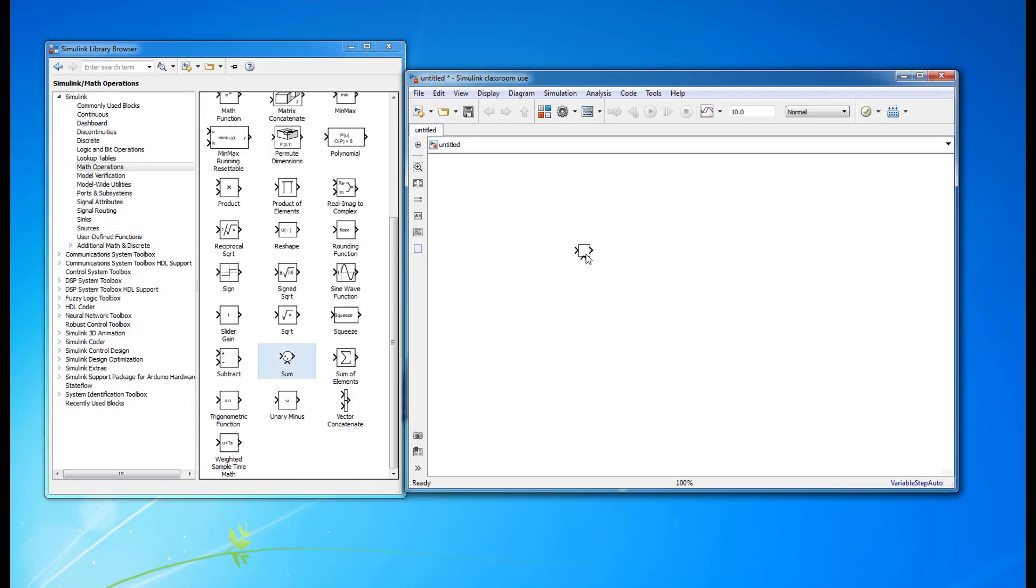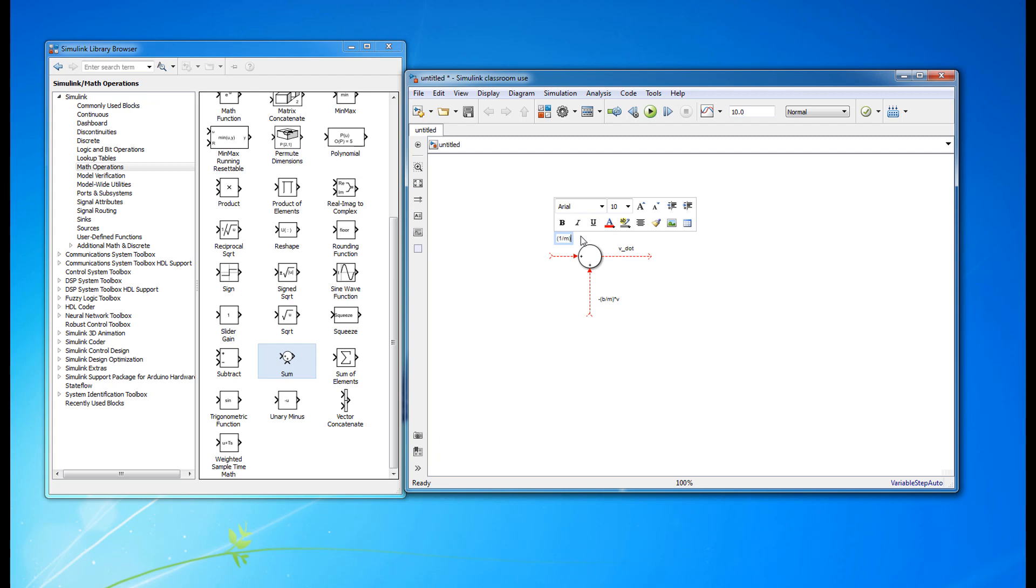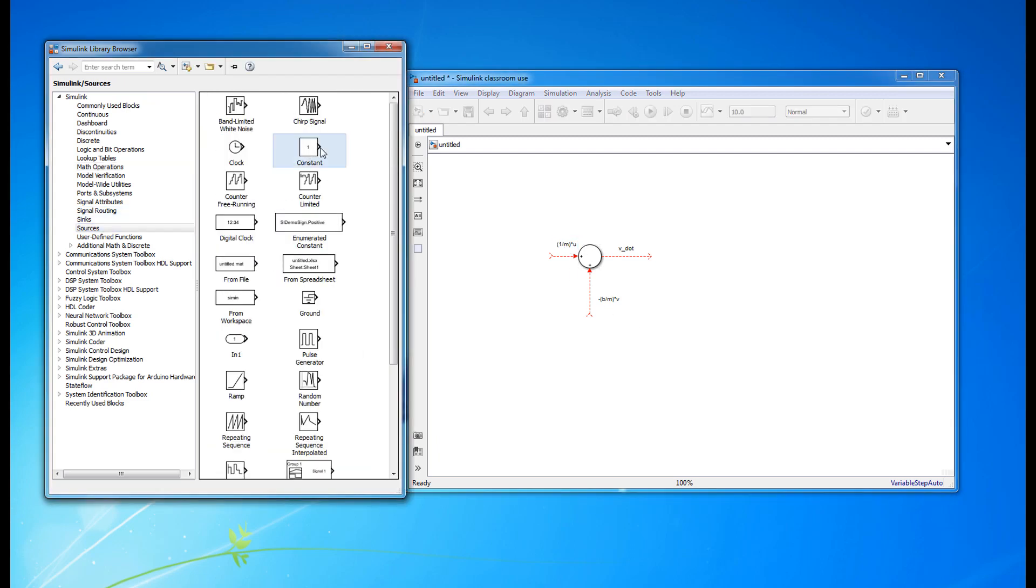Doing so is pretty simple. All we have to do is use the library browser that we explored in a previous video. Just drag and drop all of the required blocks and build the block diagram as you have sketched to complete the Simulink model.